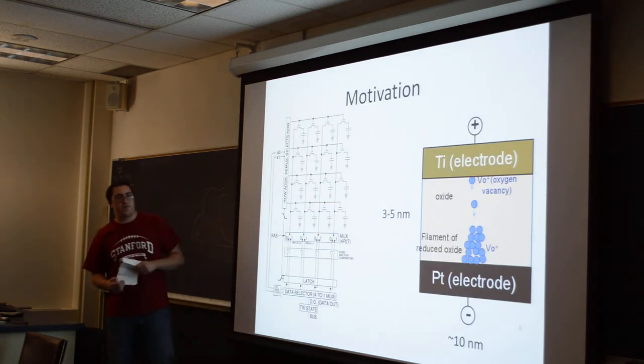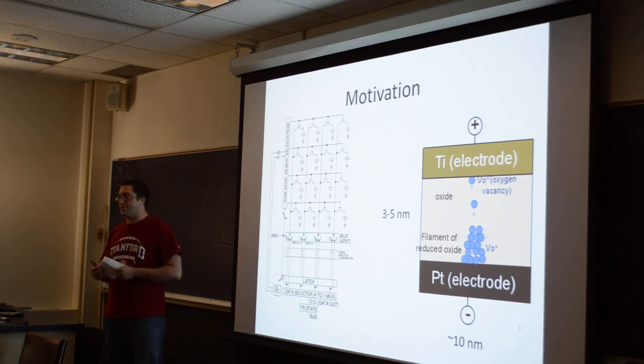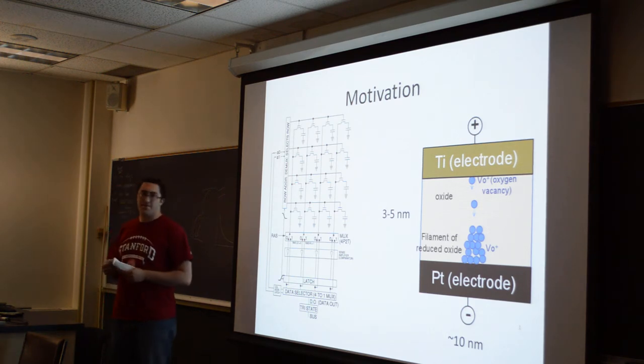Traditional memory cells are reaching a scalability limit, so in order to keep increasing the density of memory cells, scientists and researchers are looking at a number of alternatives to the traditional cell types. One of the front runners in the search for new cell types is Redox RAM memory.